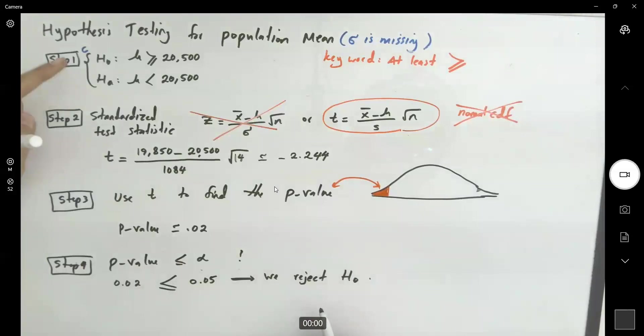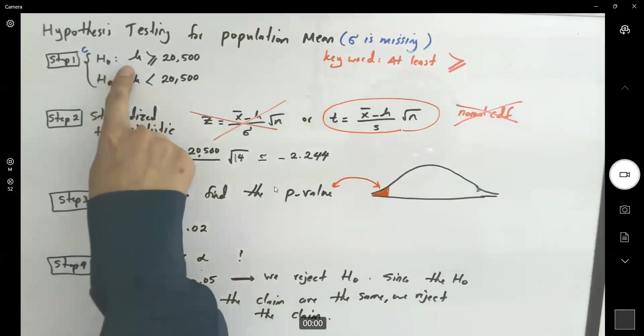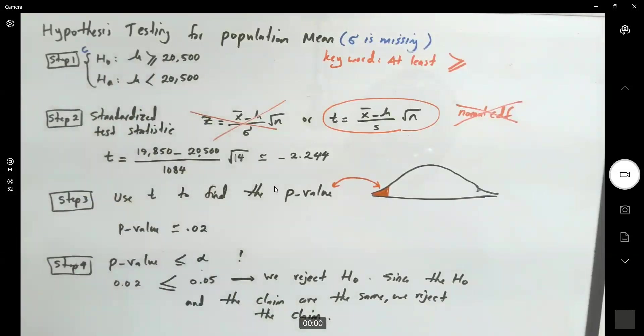We reject the null hypothesis. Now take a look at the hypothesis here. The null hypothesis and the claim are the same thing. Since the null hypothesis and the claim are the same, we reject the claim. At 5% level of significance, we reject the claim that the mean price is at least $20,500.